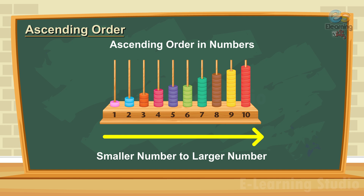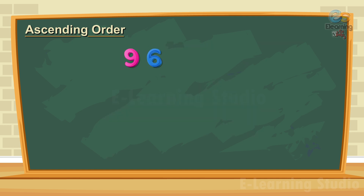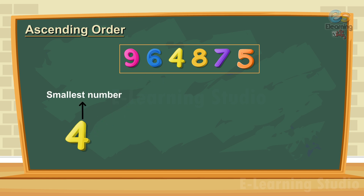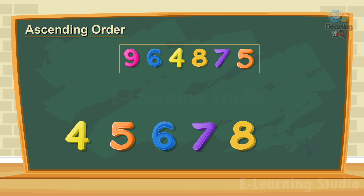Ascending order: while dealing with numbers, ascending order means moving from a smaller number to a larger number. Let us take an example. See the numbers given on the screen: 9, 6, 4, 8, 7, 5. To arrange them in ascending order, we first find the smallest number, which is 4. The number larger than 4 is 5, so the next number will be 5, and similarly next will be 6, and so on.